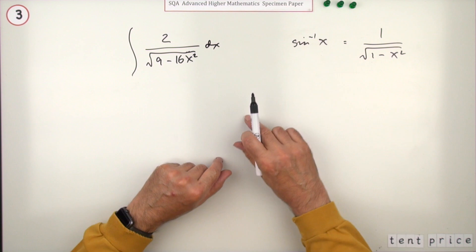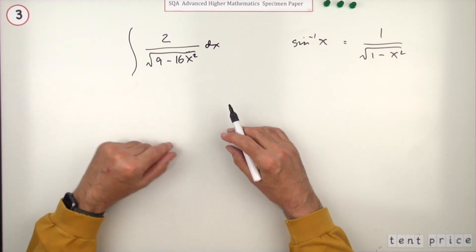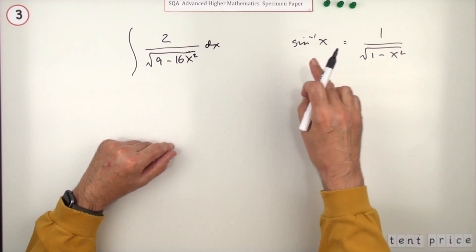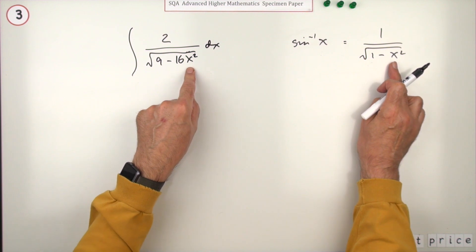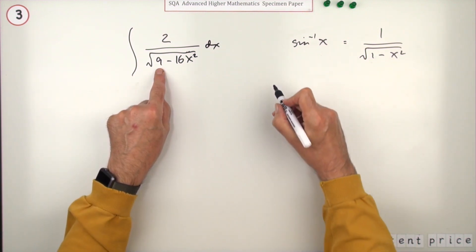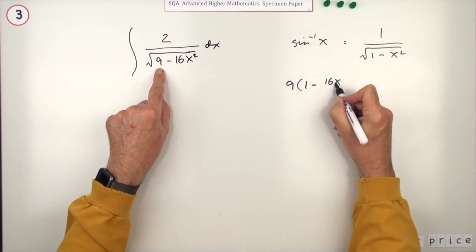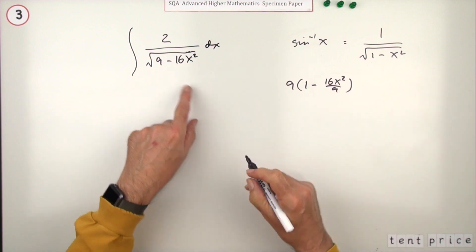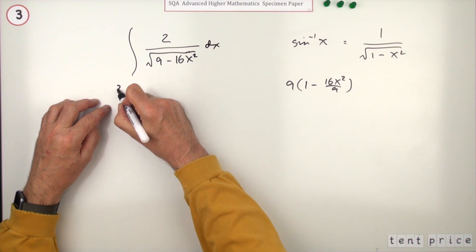If instead you decide to go for this original simpler pattern, you'd obtain a little bit more work. In this case you'd been wanting to make the first term a 1, not the x term having a coefficient of 1. So you'd be taking that 9 out of the expression to leave 1 minus 16x² upon 9 in the bracket.